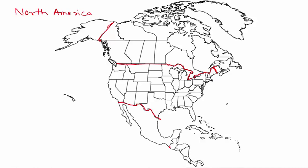There's this island on the eastern side of the map — that's basically Greenland, which is an autonomous country and a part of Denmark. If you've seen our video on Europe, you'll find where Denmark is. After this, the westernmost part here is Alaska, and this here is Hawaii.